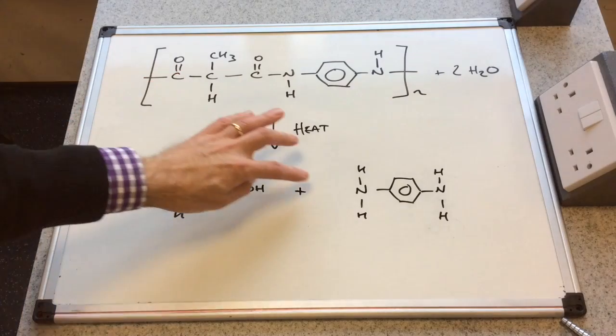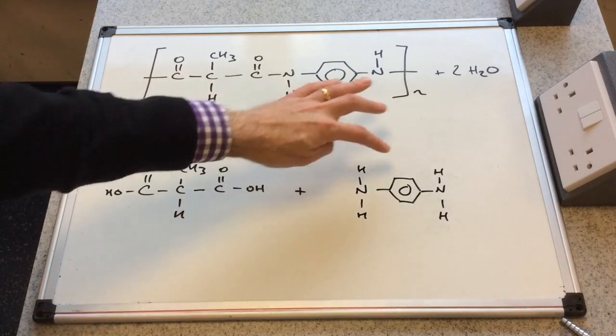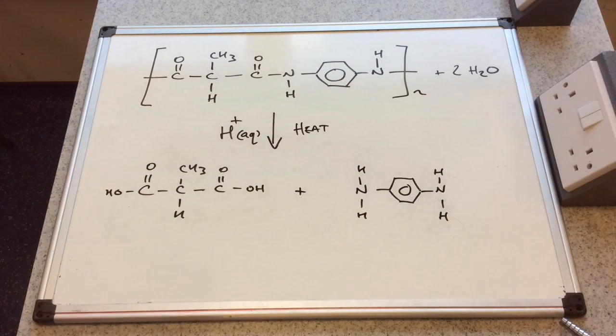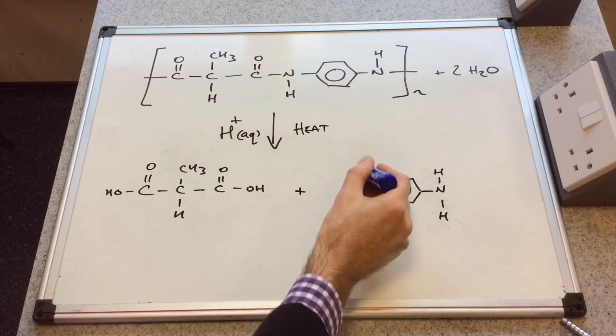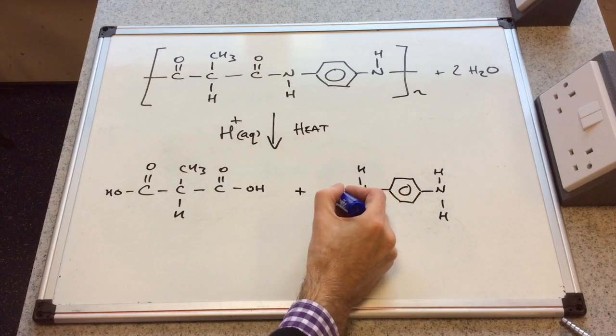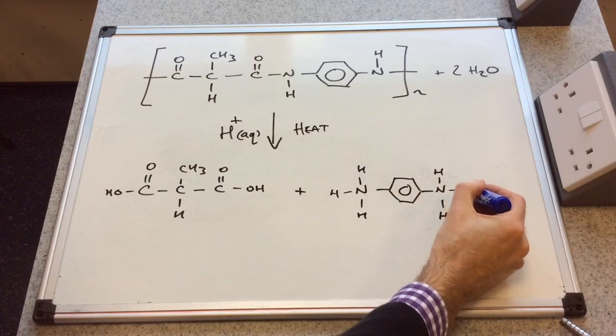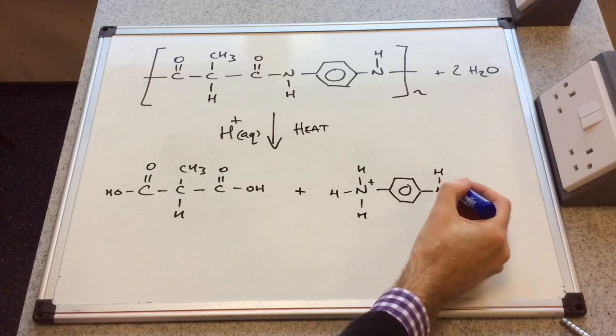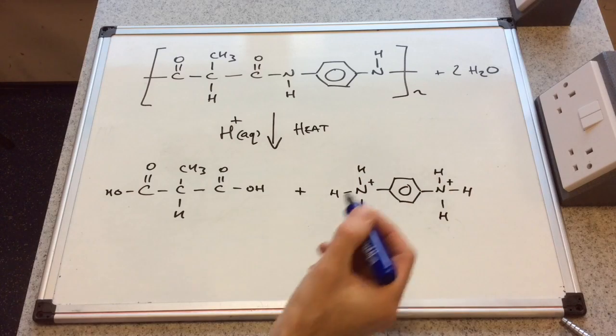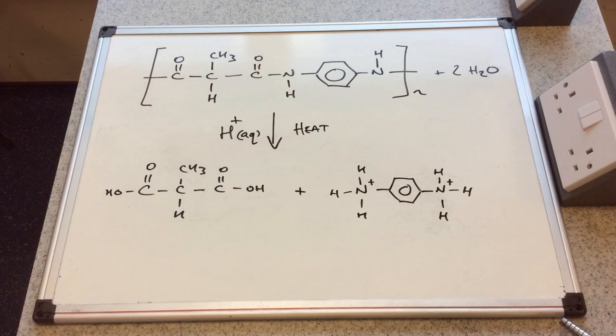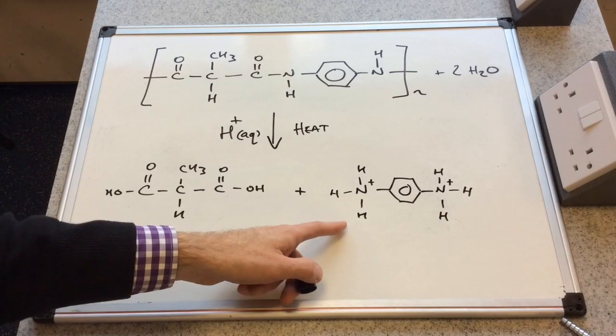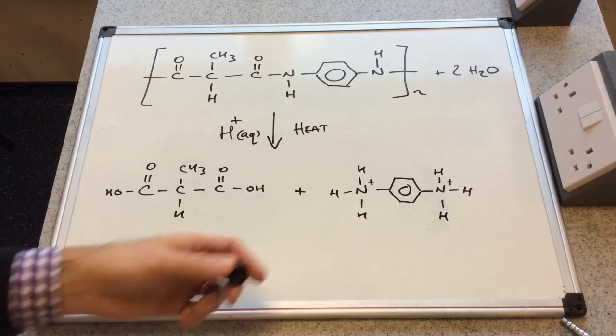H pluses can be accepted by the lone pair on these nitrogens. So instead of just getting NH2 groups here we'll actually have NH3 groups, but remember we need the plus on the nitrogen. So we've put another two H pluses into the atom count.